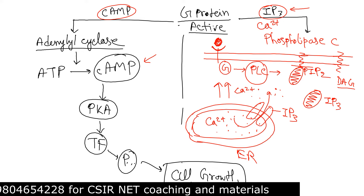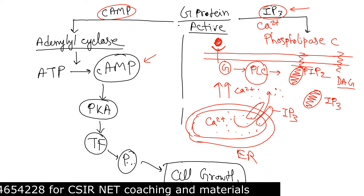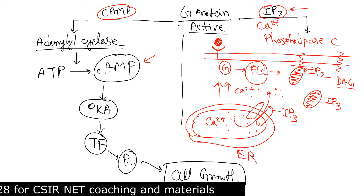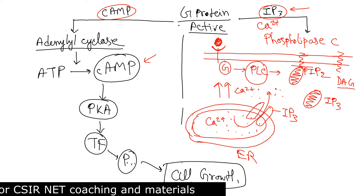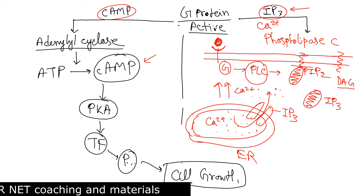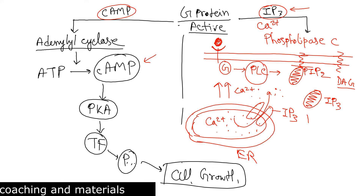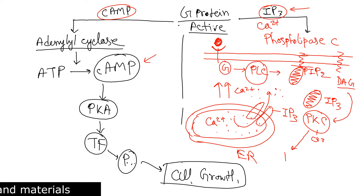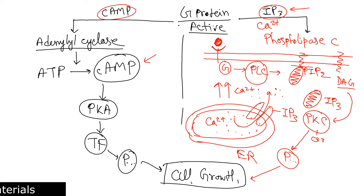Calcium influx means the net positive charge in the cytosol increases, which causes multiple changes to the cell. Calcium can bind to and activate a protein known as protein kinase C. DAG can also activate protein kinase C. Ultimately, protein kinase C activates other proteins in the cell — transcription factors — which then produce proteins that ultimately contribute to cell growth pathways, increased cellular metabolism, cell division, and cell proliferation.